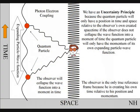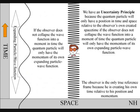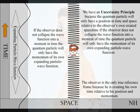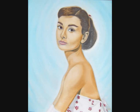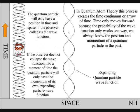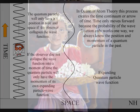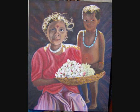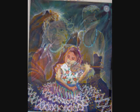We have a measurement problem, or uncertainty principle, because the quantum particle will only have a position in time and space if the wave-particle function collapses. If the observer does not collapse the wave-particle function into a moment of time, the quantum particle will only have the momentum of its own wave-particle function. At a fundamental quantum level, the observer is the observed within his or her own created space-time.